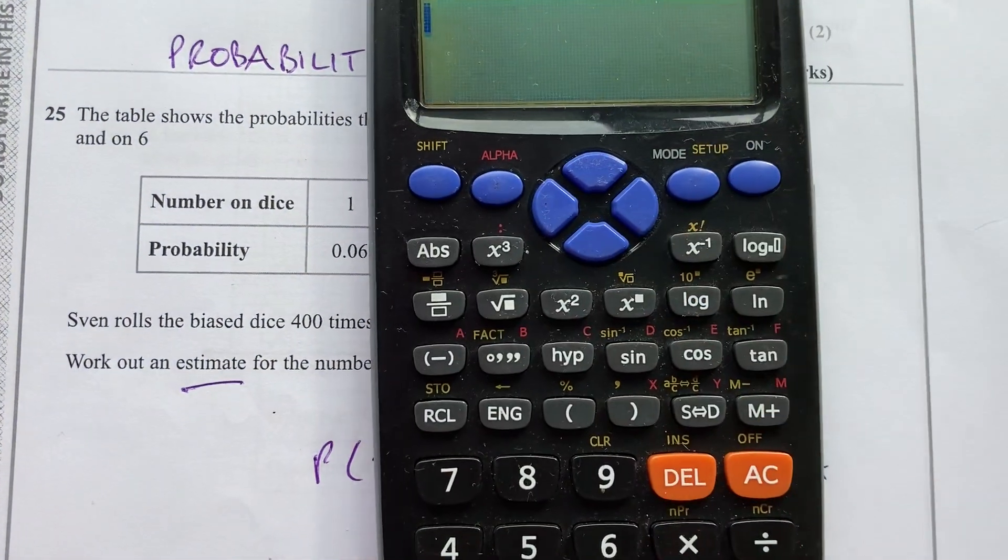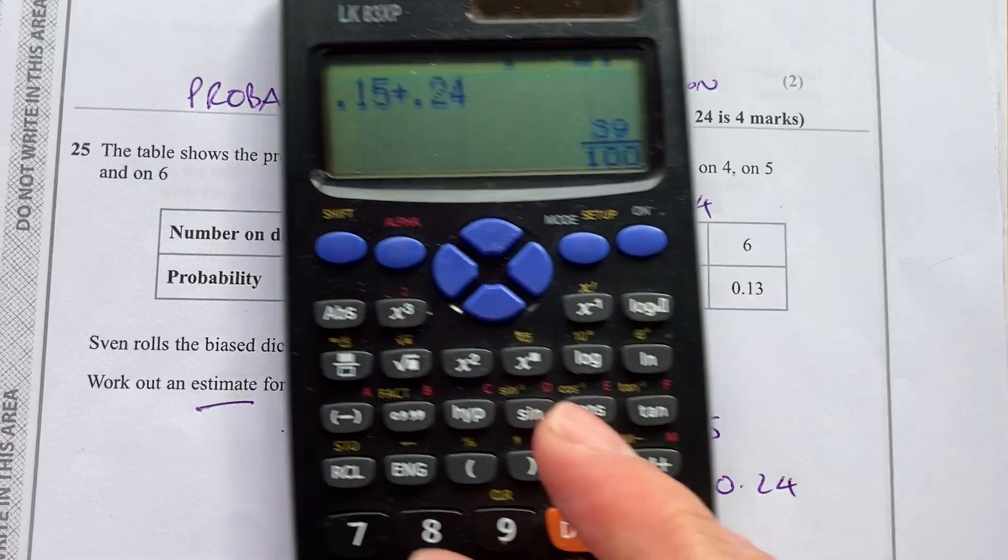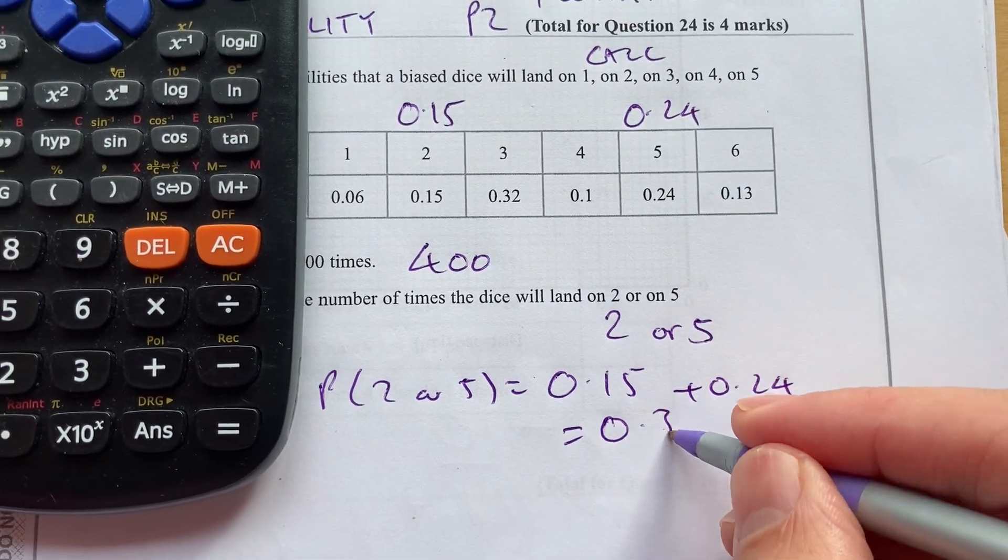I can use my calculator for that. 0.15 plus 0.24, and as a decimal, that's 0.39.